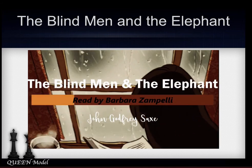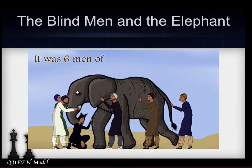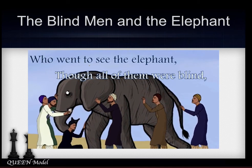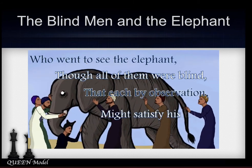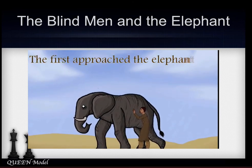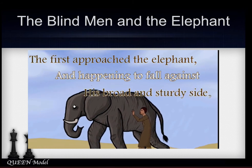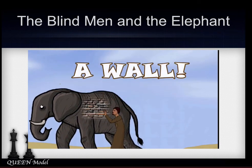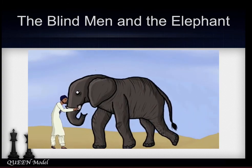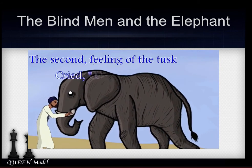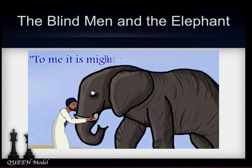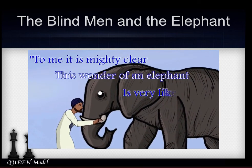The Blind Man and the Elephant by John Godfrey Sachs. It was six men of Hindustan to learning much inclined, who went to see the elephant, though all of them were blind, that each by observation might satisfy his mind. The first approached the elephant, and happening to fall against his broad and sturdy side, at once began to bawl, 'God bless me, but the elephant is very like a wall.' The second, feeling of the tusks, cried, 'Oh, what have we here? So very round and smooth and sharp. To me it is mighty clear. This wonder of an elephant is very like a spear.'